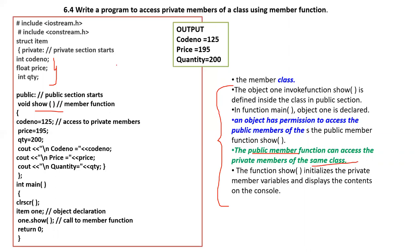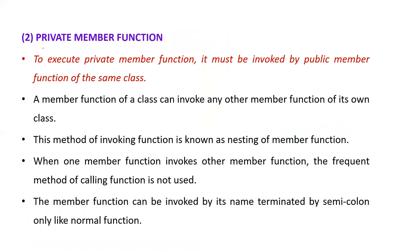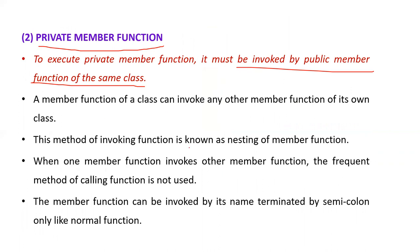The outside world does not have any rights to directly access private data. The second topic is the private member function. To execute a private member function, it must be invoked by a public member function of the same class. A member function of a class can invoke any other member function of its own class.